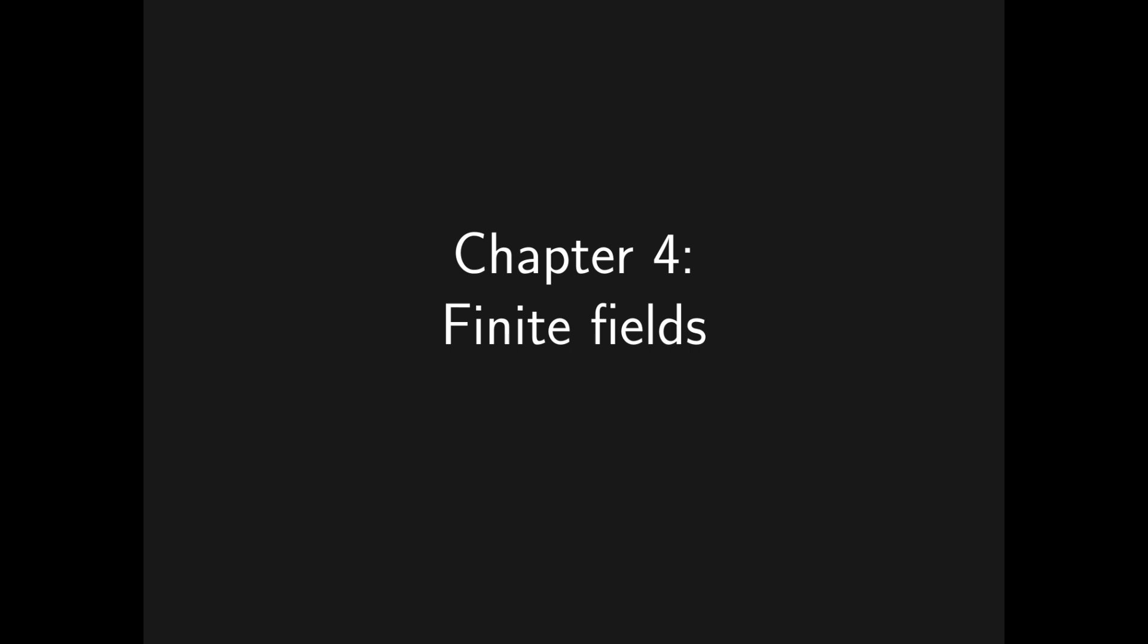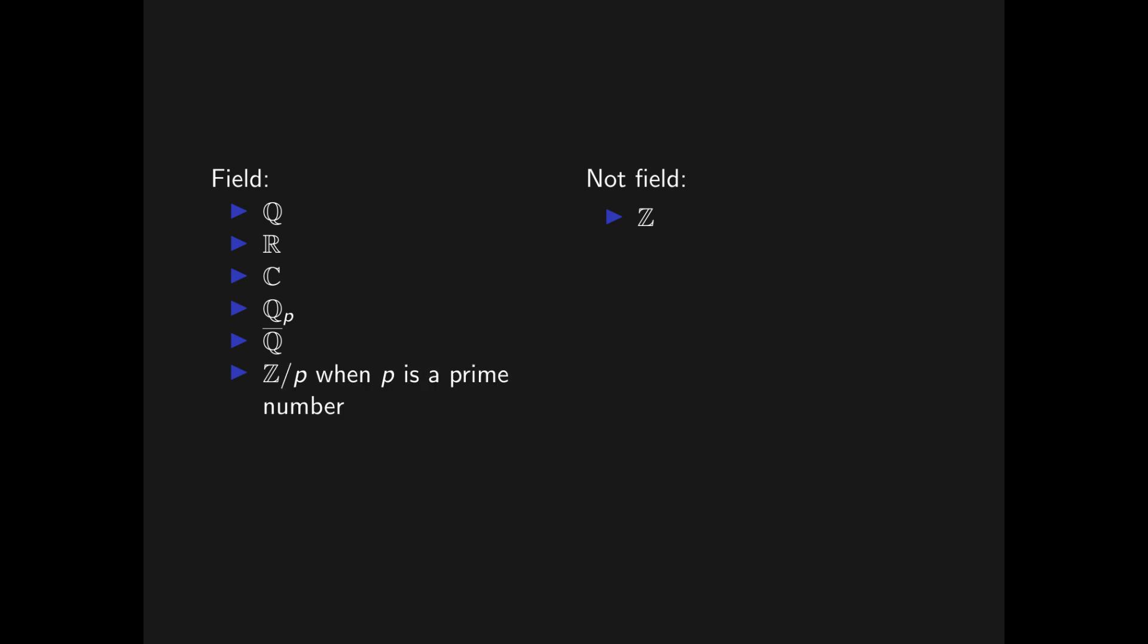Examples of fields are the rational numbers, the real numbers and the complex numbers. The p-adic numbers are also a field, as are the algebraic numbers. The integers are not a field, since division isn't always possible. Z modulo n is a field if and only if n is a prime number, otherwise it is just a commutative ring.